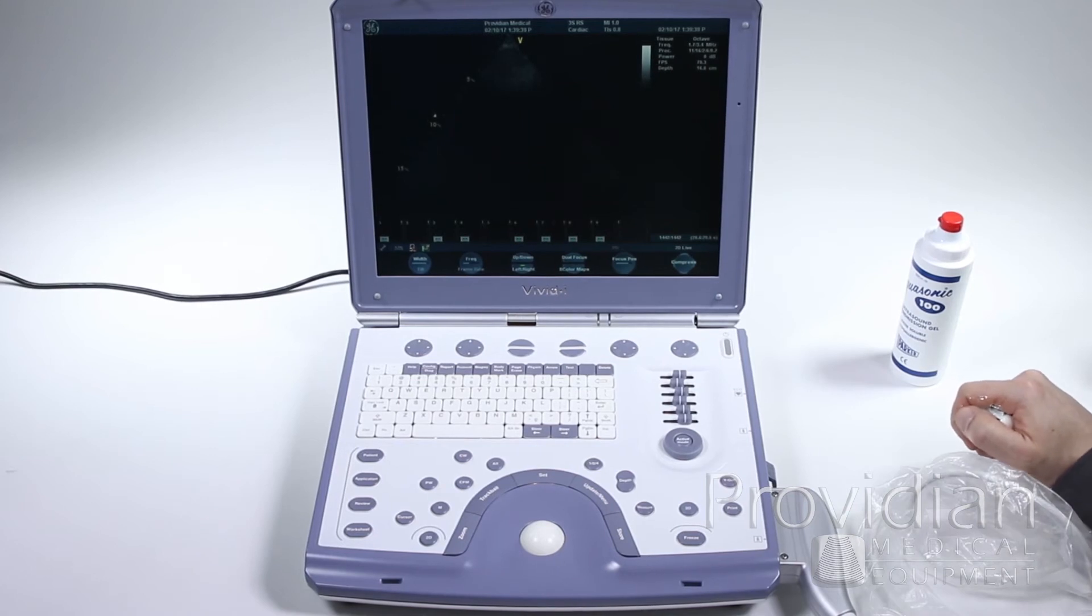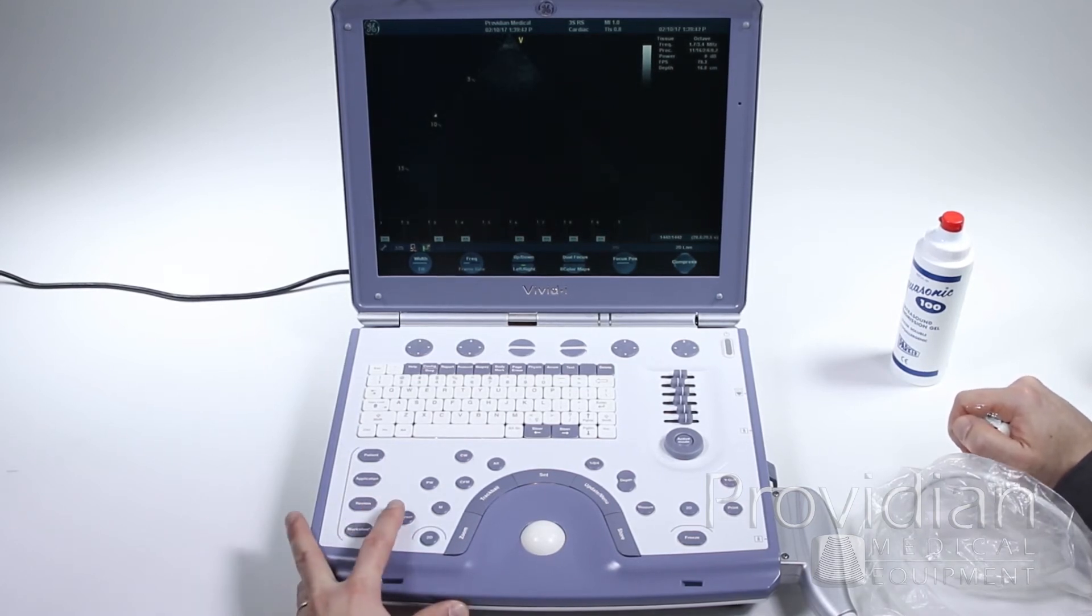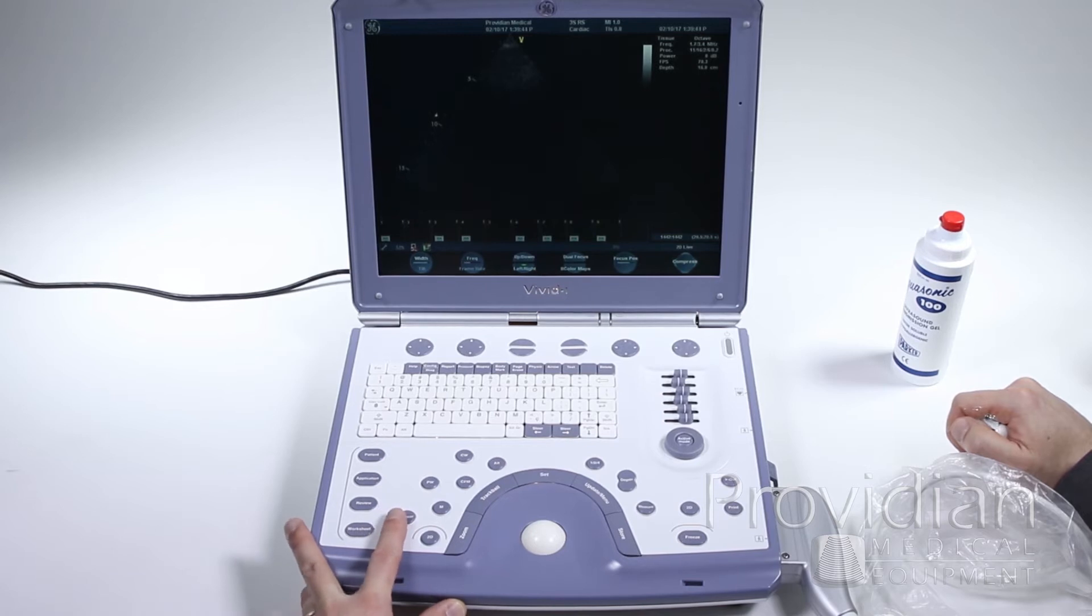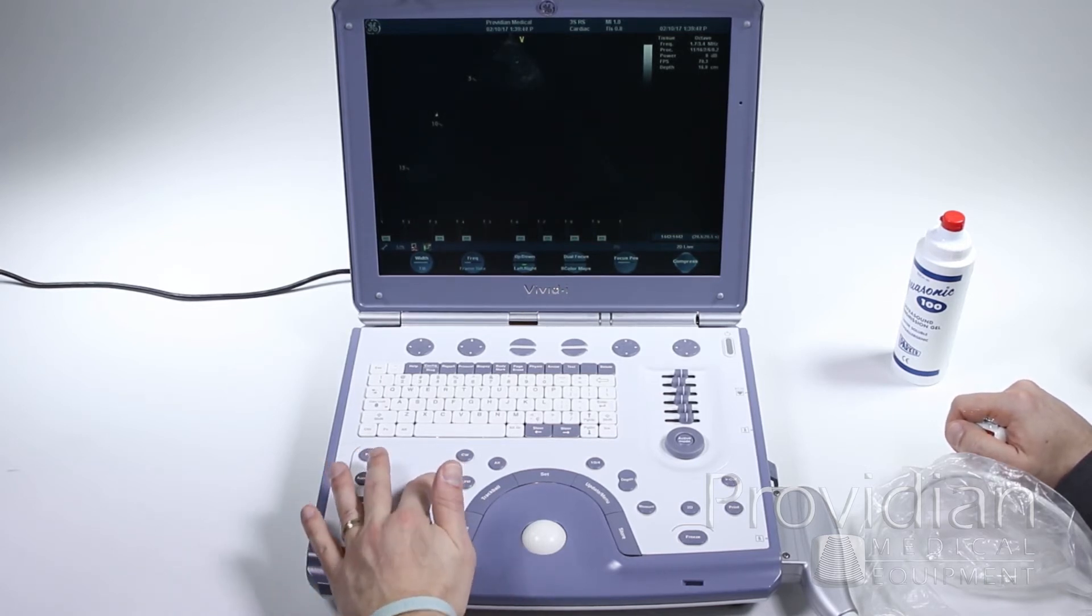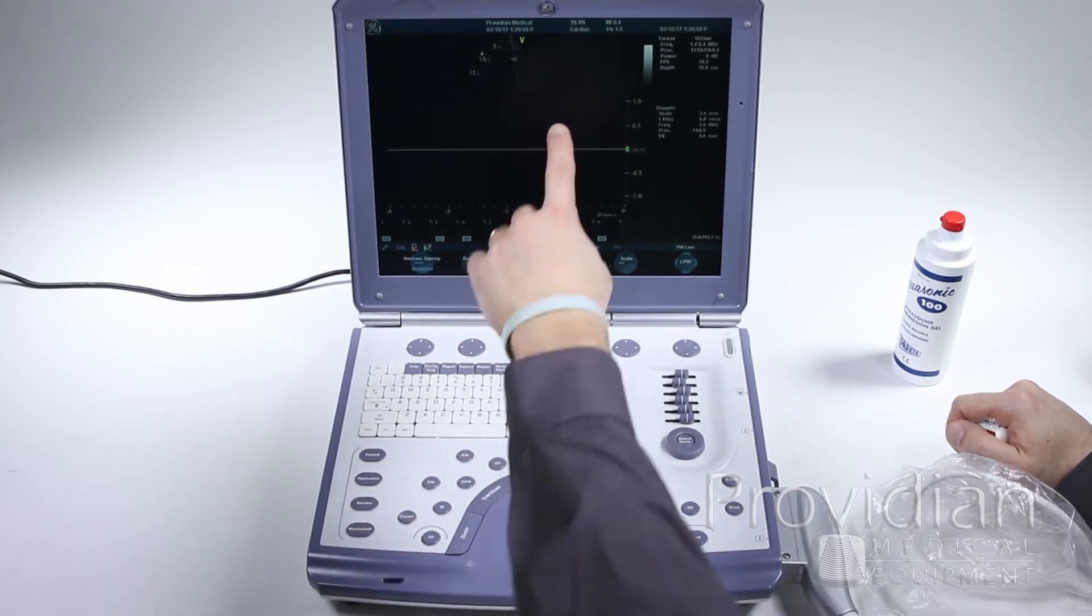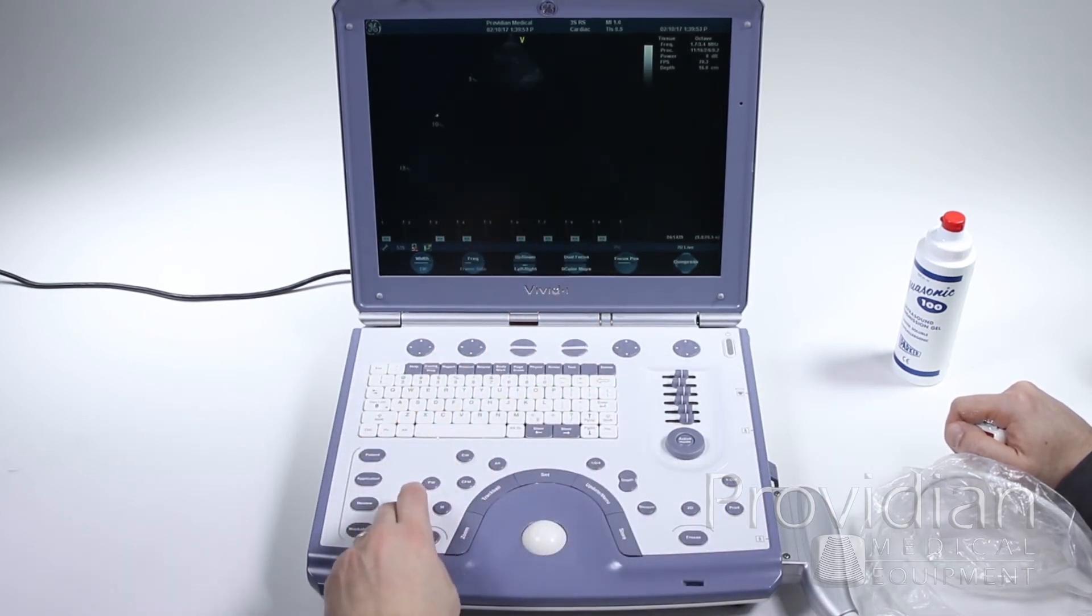Moving on to pulse wave. We'll select that cursor again because this allows us also to adjust our angle a whole lot easier. If we go directly into pulse wave, adjusting the angle of our gate is a lot more difficult, so what we want to do is first hit cursor.